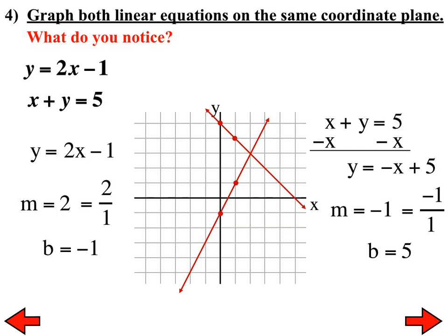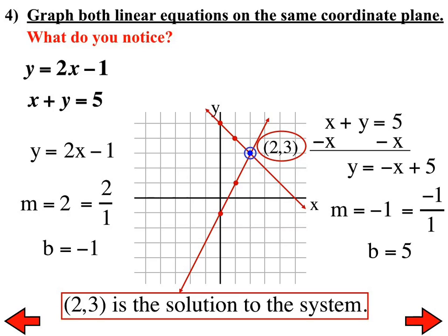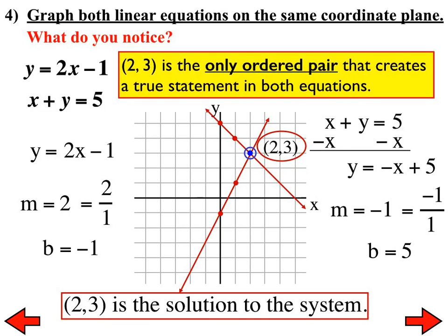What you should have noticed is that the two lines intersect each other at one ordered pair, and that ordered pair happens to be (2, 3). That ends up representing the only ordered pair that will make a true statement in both equations. In other words, that ends up being the solution to that system. So (2, 3) is the only ordered pair that creates a true statement in both equations — therefore it is the solution.